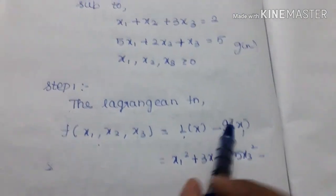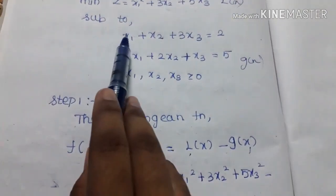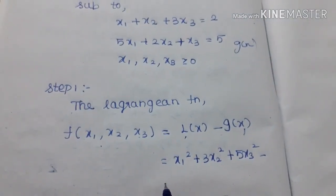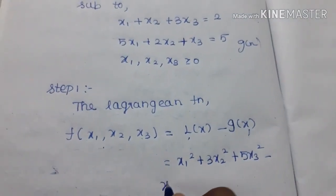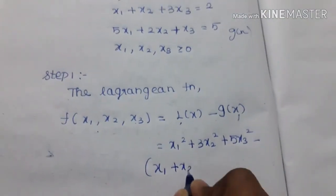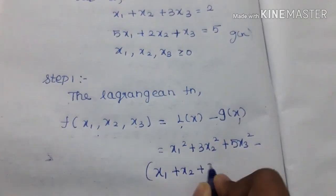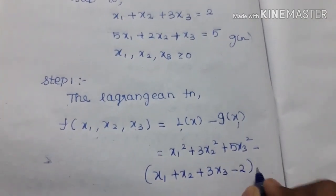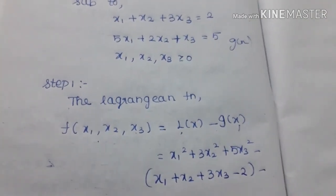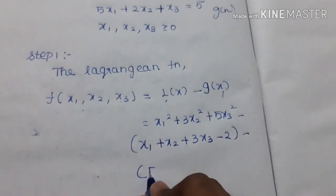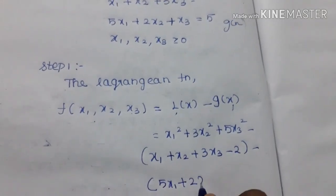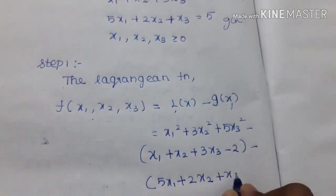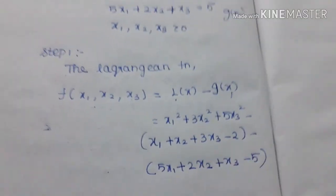Minus, we will write the value of g1(x) and g2(x). So minus of x1 plus x2 plus 3x3 minus 2, and minus of the second term: 5x1 plus 2x2 plus x3 minus 5.